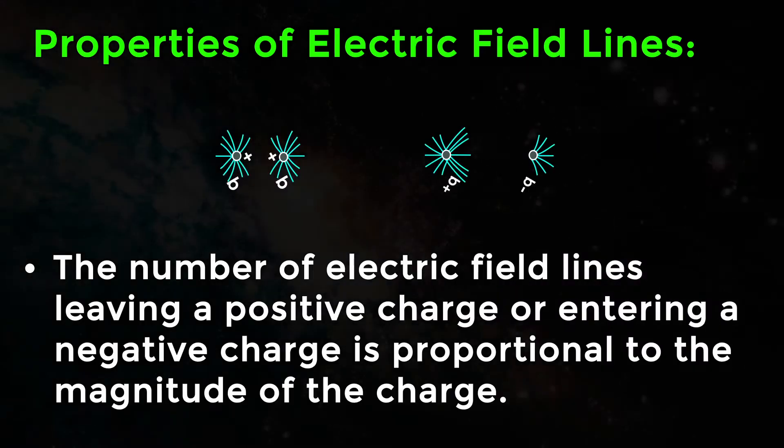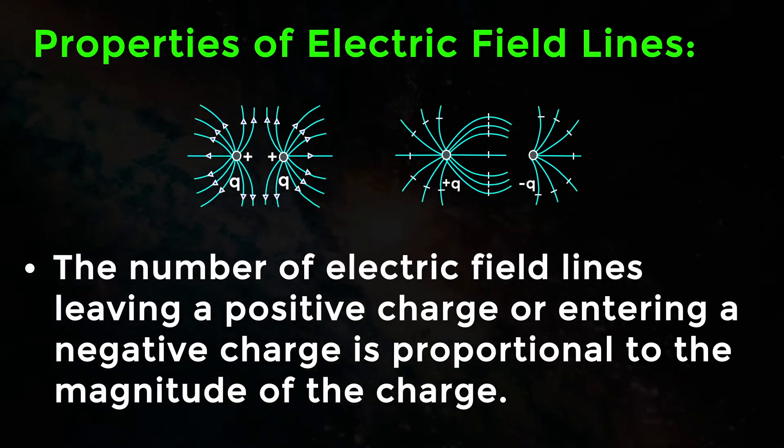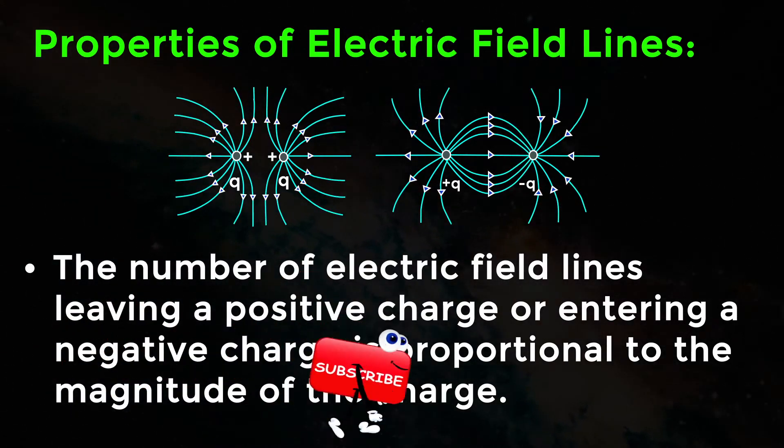The number of electric field lines leaving a positive charge or entering a negative charge is proportional to the magnitude of the charge.